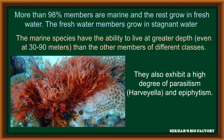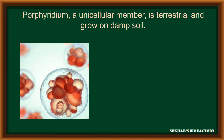They also exhibit a high degree of parasitism, e.g. Harveyella, and some of the members that grow on other members are called epiphytes. One of the members, Porphyridium, is a unicellular member and terrestrial in nature, generally growing on damp soil.